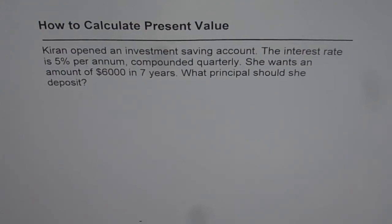How to calculate present value? Kiran opened an investment saving account. The interest rate is 5% per annum, compounded quarterly. She wants an amount of $6,000 in 7 years. What principal should she deposit?